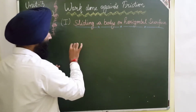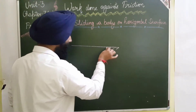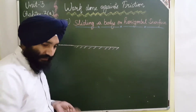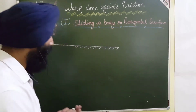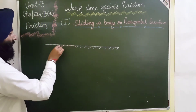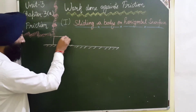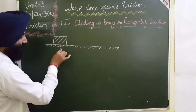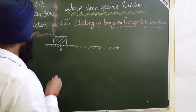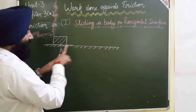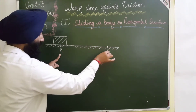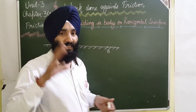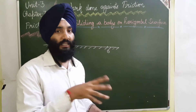In this first case, we are considering a body on a horizontal leveled surface. Here I am considering one body of mass m. Suppose this is the body of mass m at position A. Now what I want is to displace it to any point B. So I have to apply some force on this body.